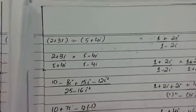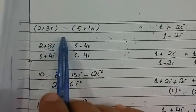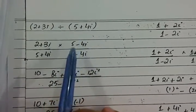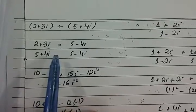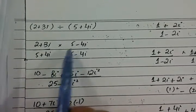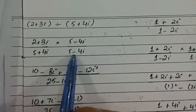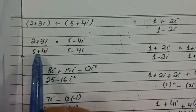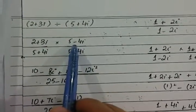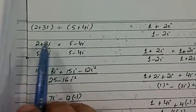Now, how are two complex numbers divided? Since we cannot directly divide, we take help from multiplication. We multiply and divide by the conjugate of the denominator complex number. If the denominator is in plus form, its conjugate will be in minus form. The multiplication then proceeds in the usual way.